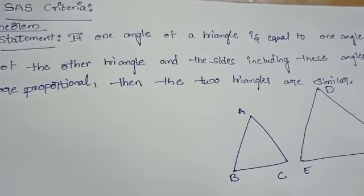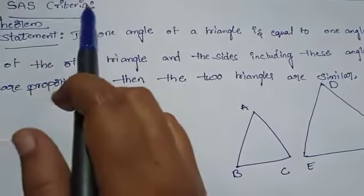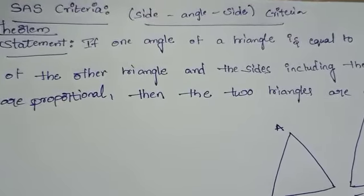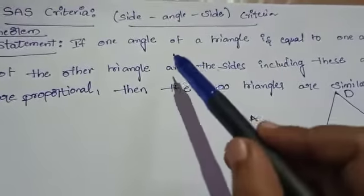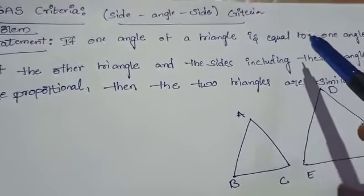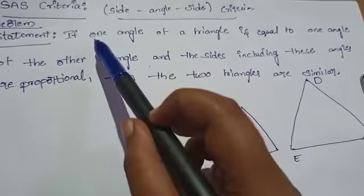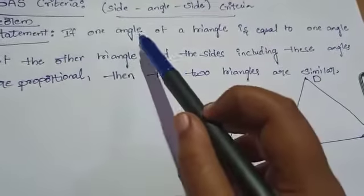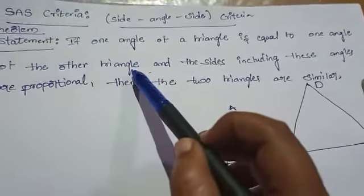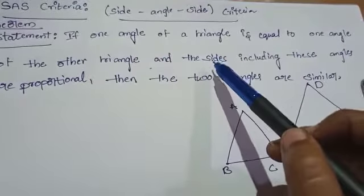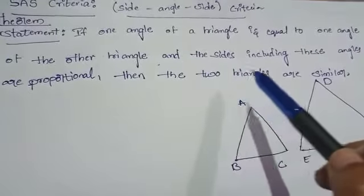Let's discuss the SAS criteria, where SAS means Side-Angle-Side criteria. The theorem statement is: if one angle of a triangle is equal to one angle of another triangle, and the sides including these angles are proportional, then the two triangles are similar.